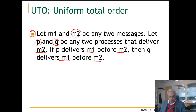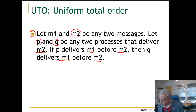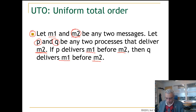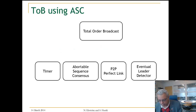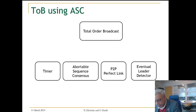Now that we have the abstraction, let us do an implementation of total order broadcast. In this implementation we are going to use abortable sequence consensus, which we described at the beginning of this unit. Let us look at what components we need. We are going to implement a total order broadcast abstraction with a broadcast request and a deliver message-from-source event.